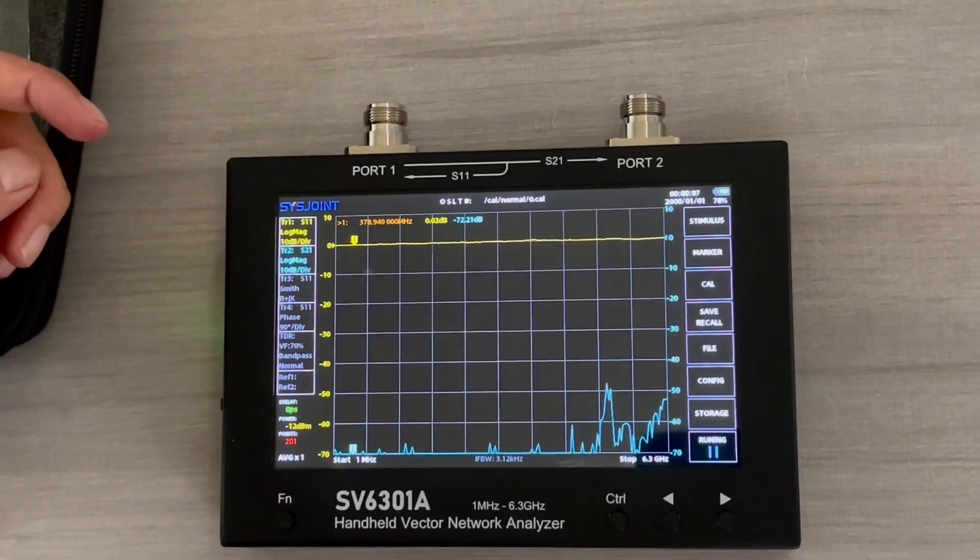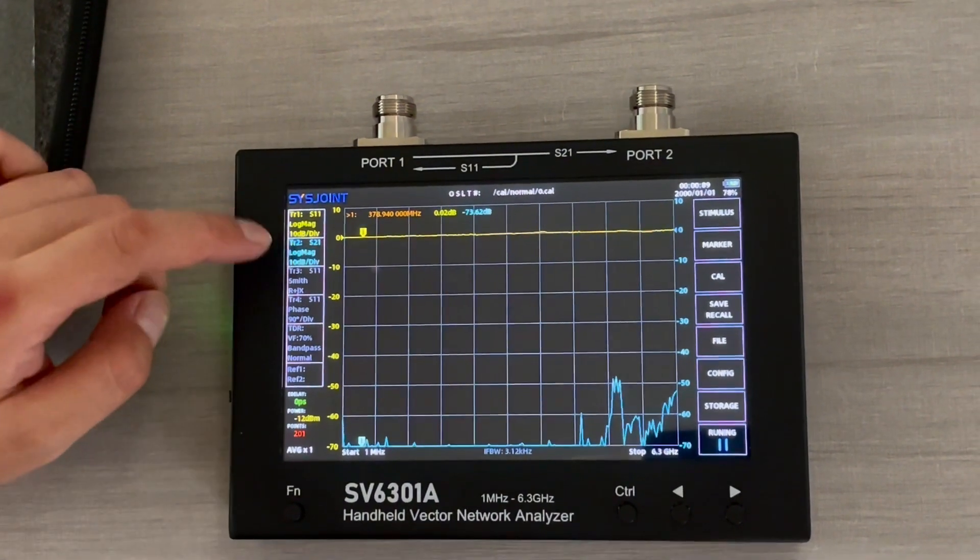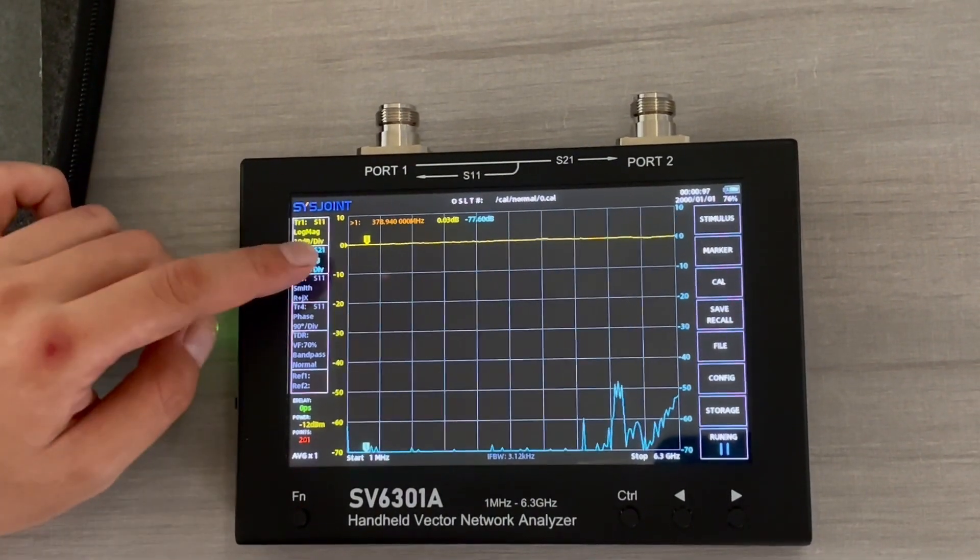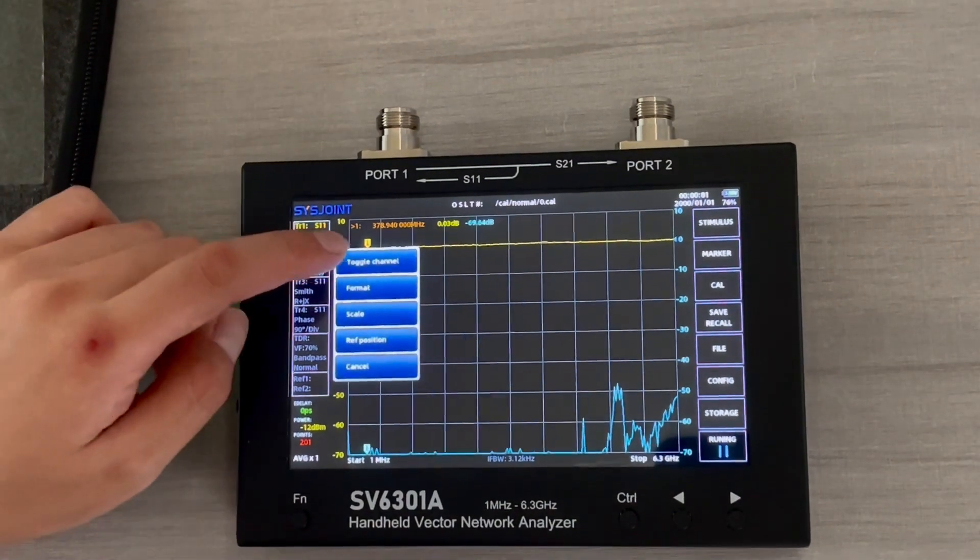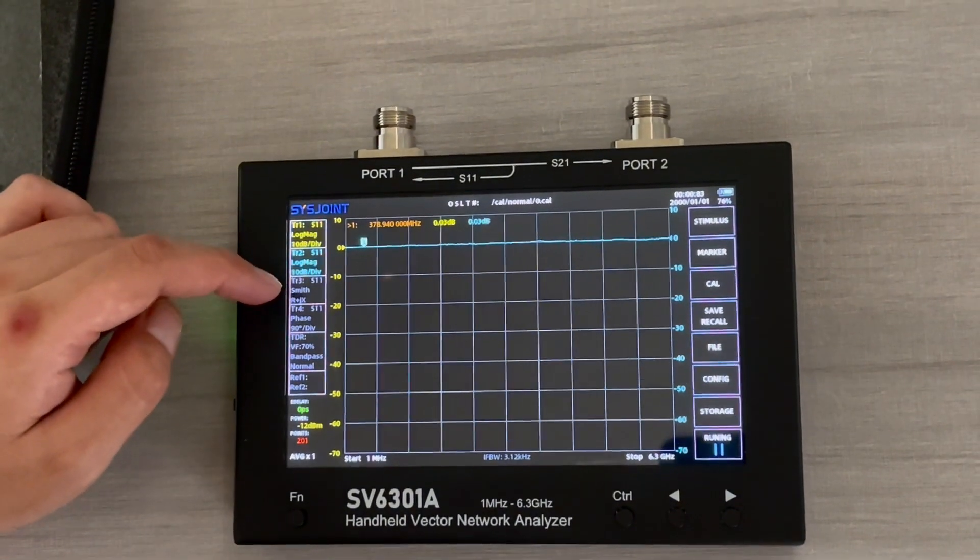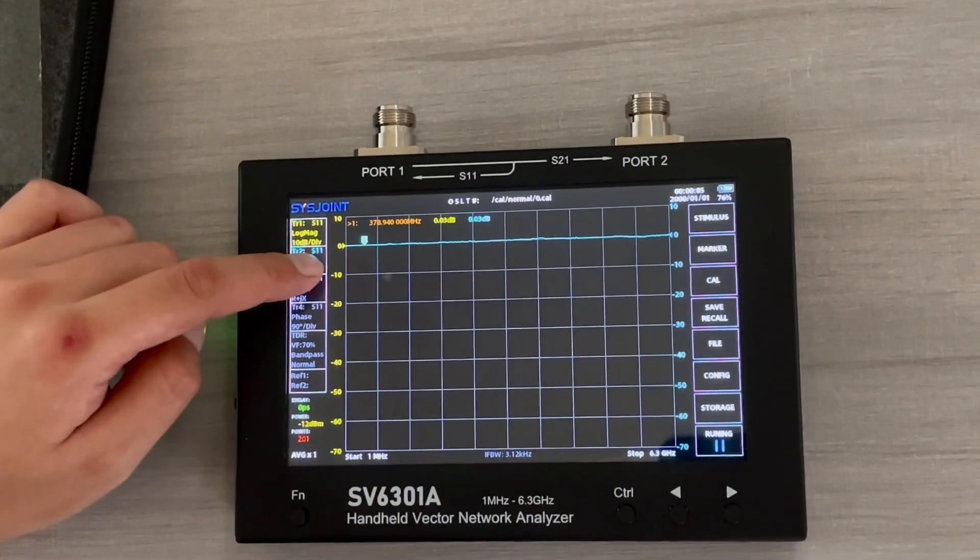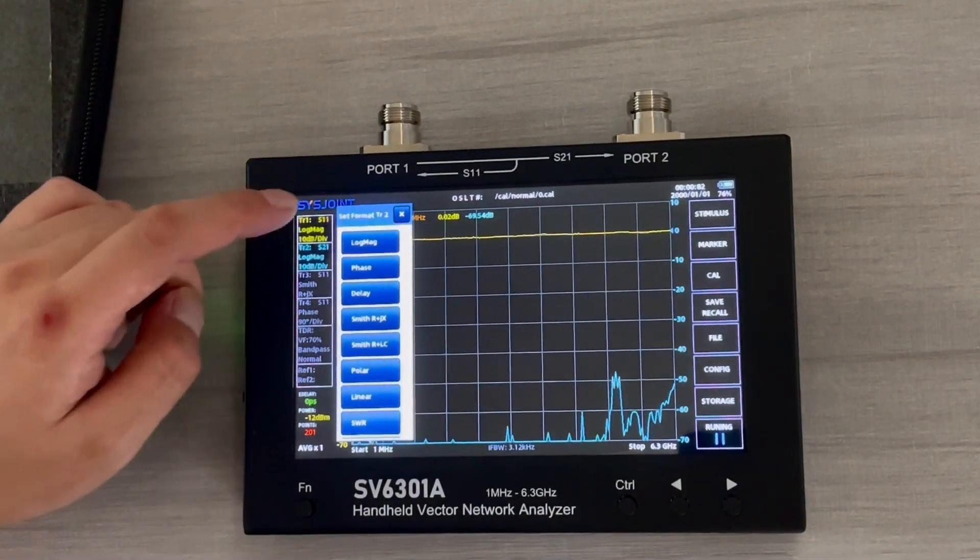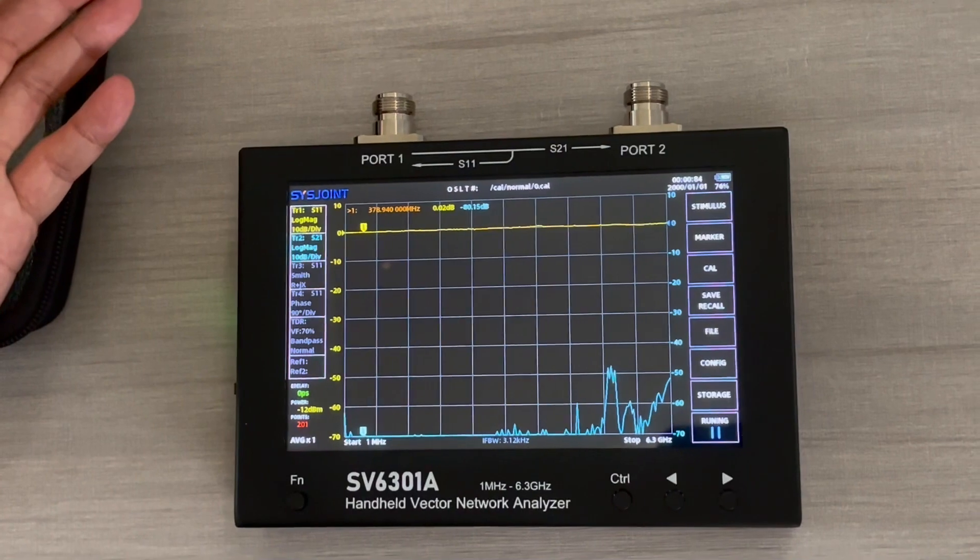For the next trace, the same thing - you enable the trace. If currently the channel is not S21 but S11, what you want to do is toggle the channel here. You can switch from 21 to 11 and 11 to 21. Then go to format and logmeg.